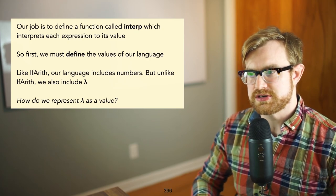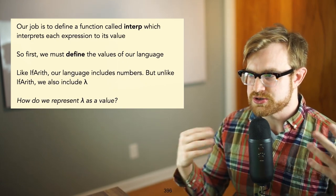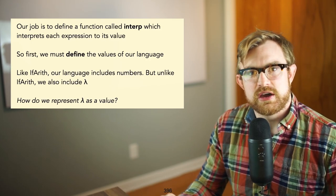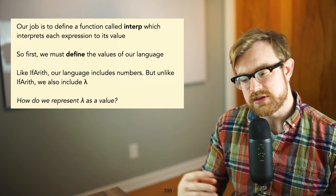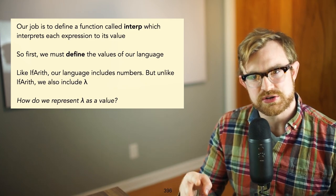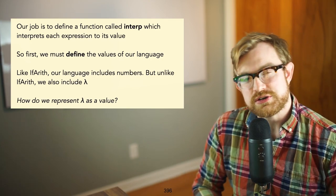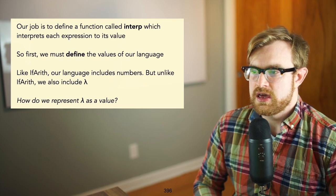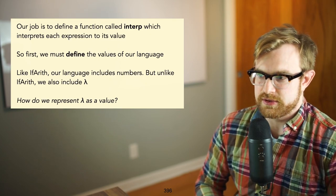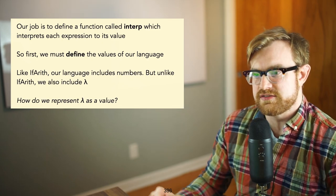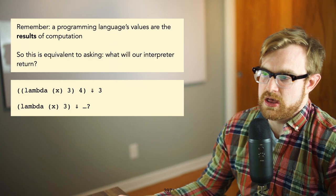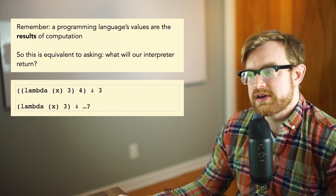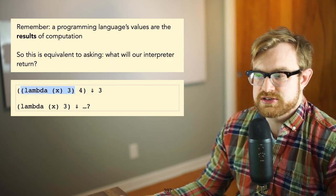Our job for the rest of the lecture is to define a function called `interp` that takes an expression as input and gives its corresponding value as output. First we need to define the set of values of our language — values are the results of computation. Like IFA-WREATH, our language includes numbers. But unlike IFA-WREATH, we also have lambdas, except we'll represent them differently. To motivate this, consider evaluating the application `(lambda x 3)` applied to `4` — we have to evaluate the sub-expression `(lambda x 3)` and ask: what value does a lambda evaluate to?